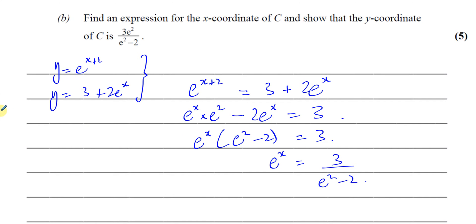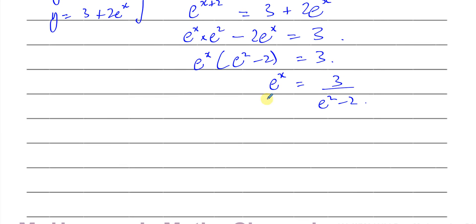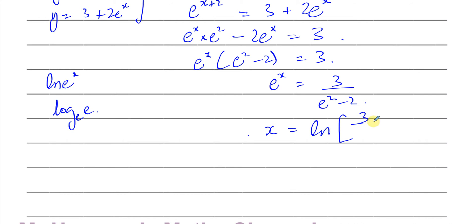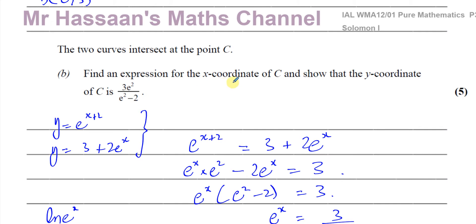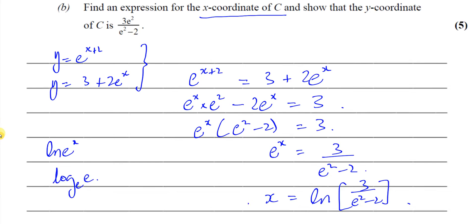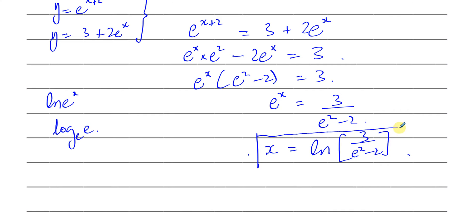We want an expression for the x-coordinate of C. We have it in terms of e to the power of x. Taking the ln of both sides: ln of e to the power of x gives x by the power law, since ln of e equals 1. So x equals ln of 3 over (e squared minus 2). That's the expression for the x-coordinate of C — that's the first part of part B.